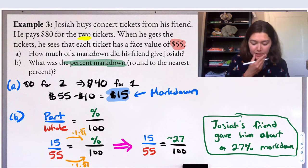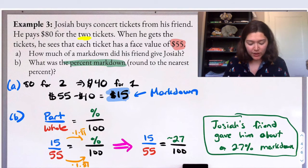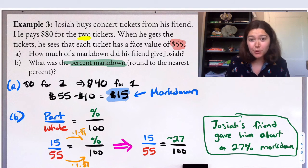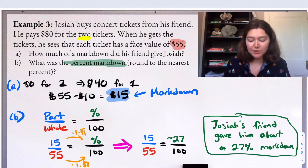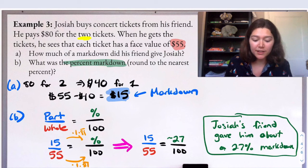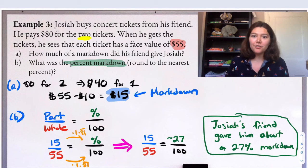And we will get about 27%. So there's about a 27% markdown of the original cost of the face value of that ticket. So he's saving $15 from his friend per ticket, which was nice. And he's also saving 27% of the original cost.